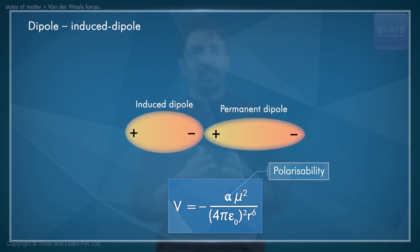The term alpha is called the polarizability of the non-polar molecule. Now, it is a measure of the ease with which the electron distribution in the neutral entity could be distorted by an external electric field. The dipole-induced dipole interaction is another example of the van der Waals force because it falls off as the inverse sixth power of distance.